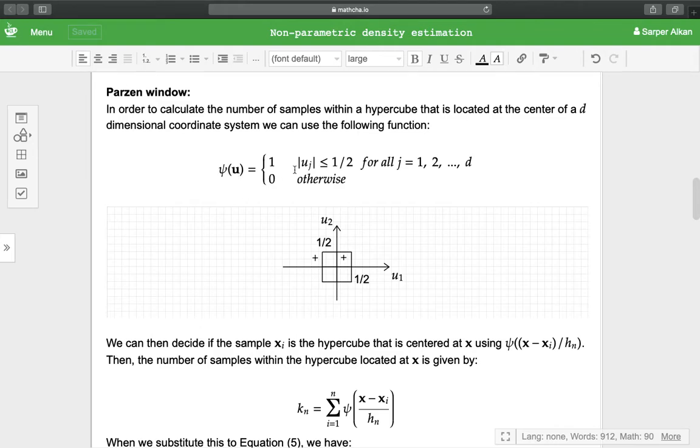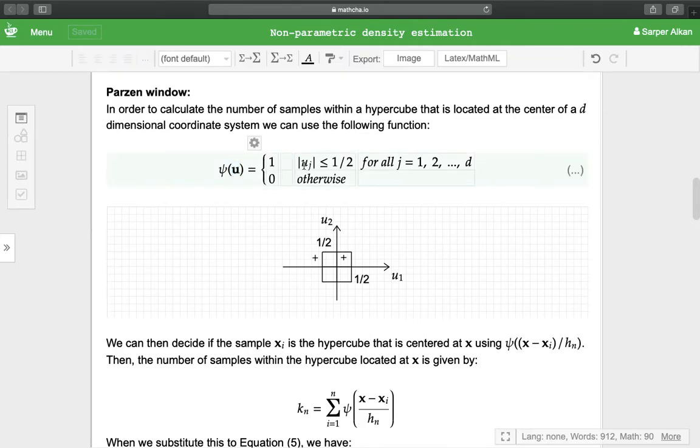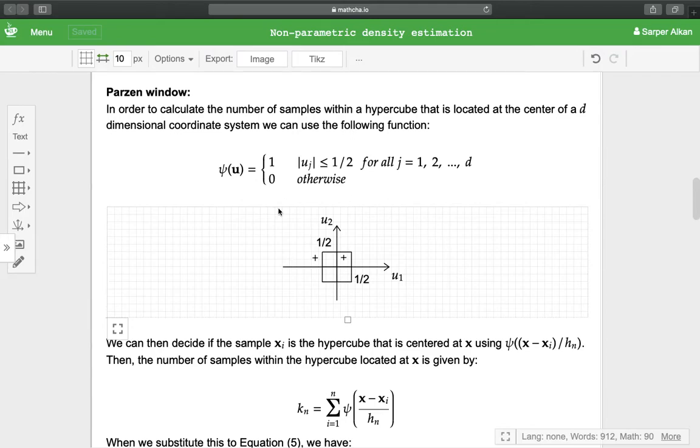The function φ takes a vector u and checks if every component of the vector is less than 1/2. So in a two-dimensional case, if the given vector is here, we can see that the first component of the vector is less than 1/2 and the second component is also less than 1/2.